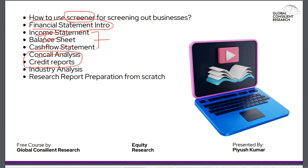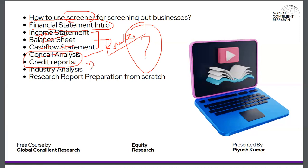Concall simply means conference calls — it's a conversation between analysts and management, like a parent-teacher meeting for a company. The top management — CFO, CEO, managing director — talks with sell-side and buy-side analysts and portfolio managers, discussing their results and future plans. For credit reports, we will look at credit rating agencies — probably the most controversial agencies in the world — and how to read a credit report. We will also cover industry analysis using Porter's Five Forces.